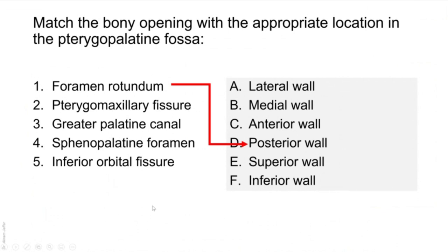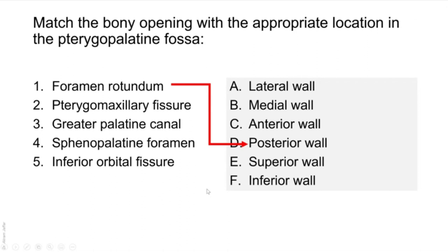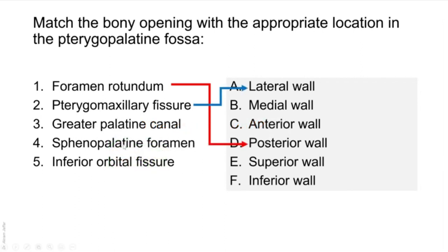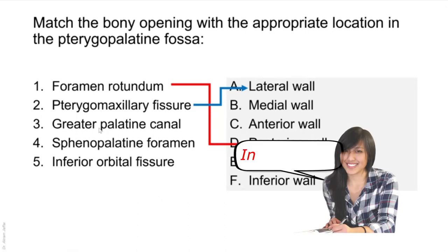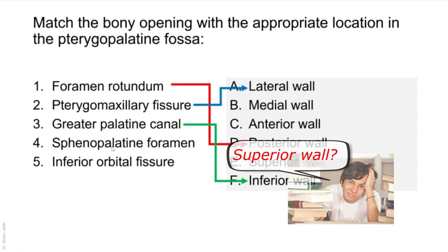What about the pterygomaxillary fissure? In which wall of the pterygopalatine fossa is it located? That will be the lateral wall. If we change the question and ask which wall of the infratemporal fossa it belongs to, the answer changes. As far as the pterygopalatine fossa is concerned, the pterygomaxillary fissure is in the lateral wall. The greater palatine canal that leads to the palate is inferior. And the sphenopalatine foramen is in the medial wall.